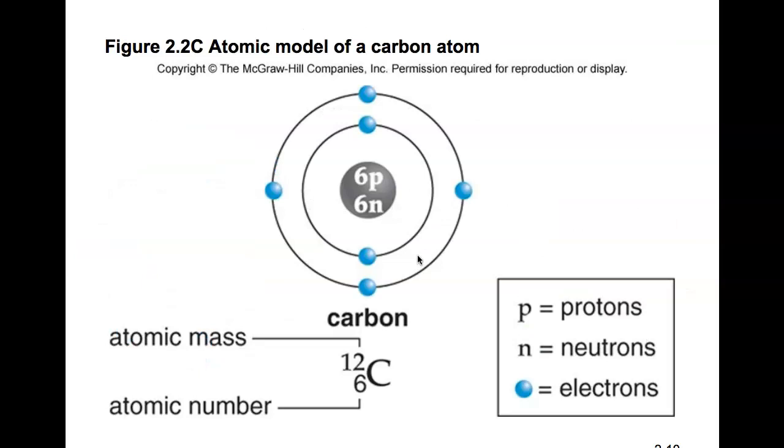An atomic model of carbon includes this. If you look at the carbon atom, down here is what you'd see on the periodic table. We have the elemental name, we have its atomic symbol, which is a capital C, the atomic mass, which is 12.00, and the atomic number, which is 6.